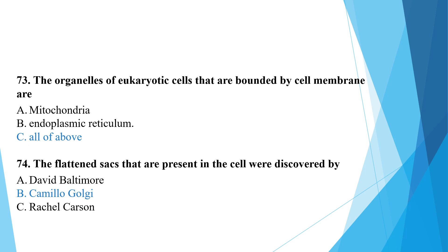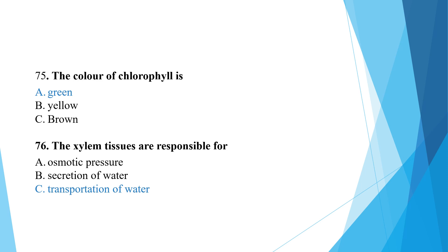The flattened sacs present in cells were discovered by Camillo Golgi. The color of chlorophyll is green — plants appear green due to the presence of chlorophyll. Vascular tissues are responsible for the transportation of water.